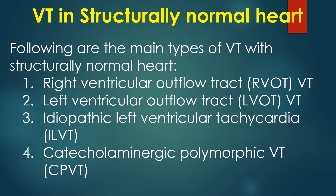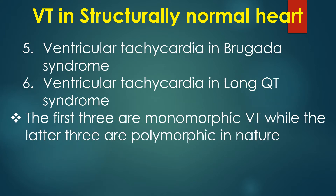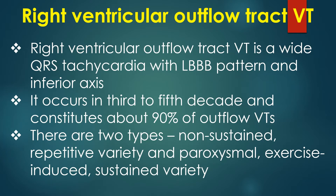The main types of VT with structurally normal heart are: (1) Right ventricular outflow tract VT, (2) Left ventricular outflow tract VT, (3) Idiopathic left ventricular tachycardia, (4) Catecholaminergic polymorphic ventricular tachycardia, (5) Ventricular tachycardia in Brugada syndrome, and (6) Ventricular tachycardia in long QT syndrome. The first three are monomorphic VT while the latter three are polymorphic in nature.